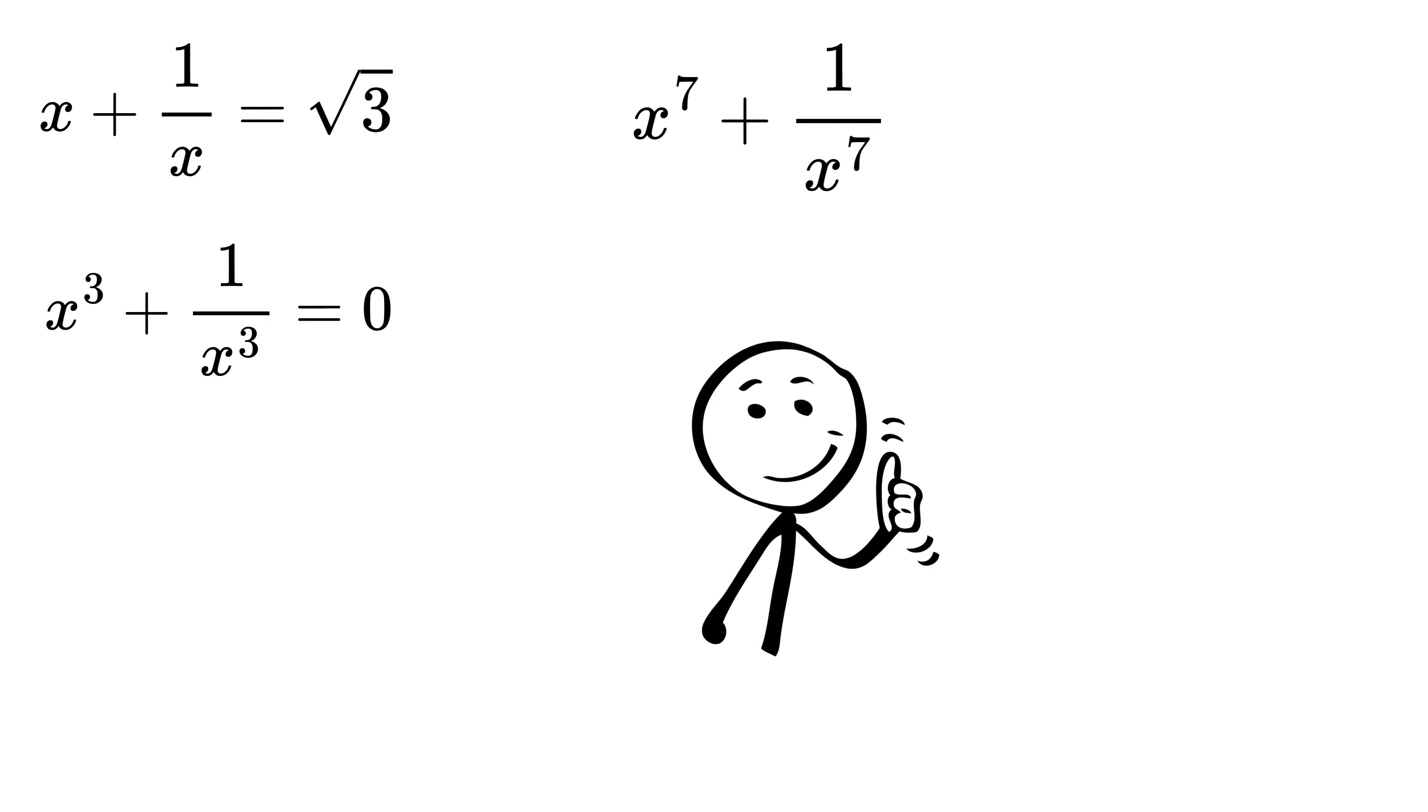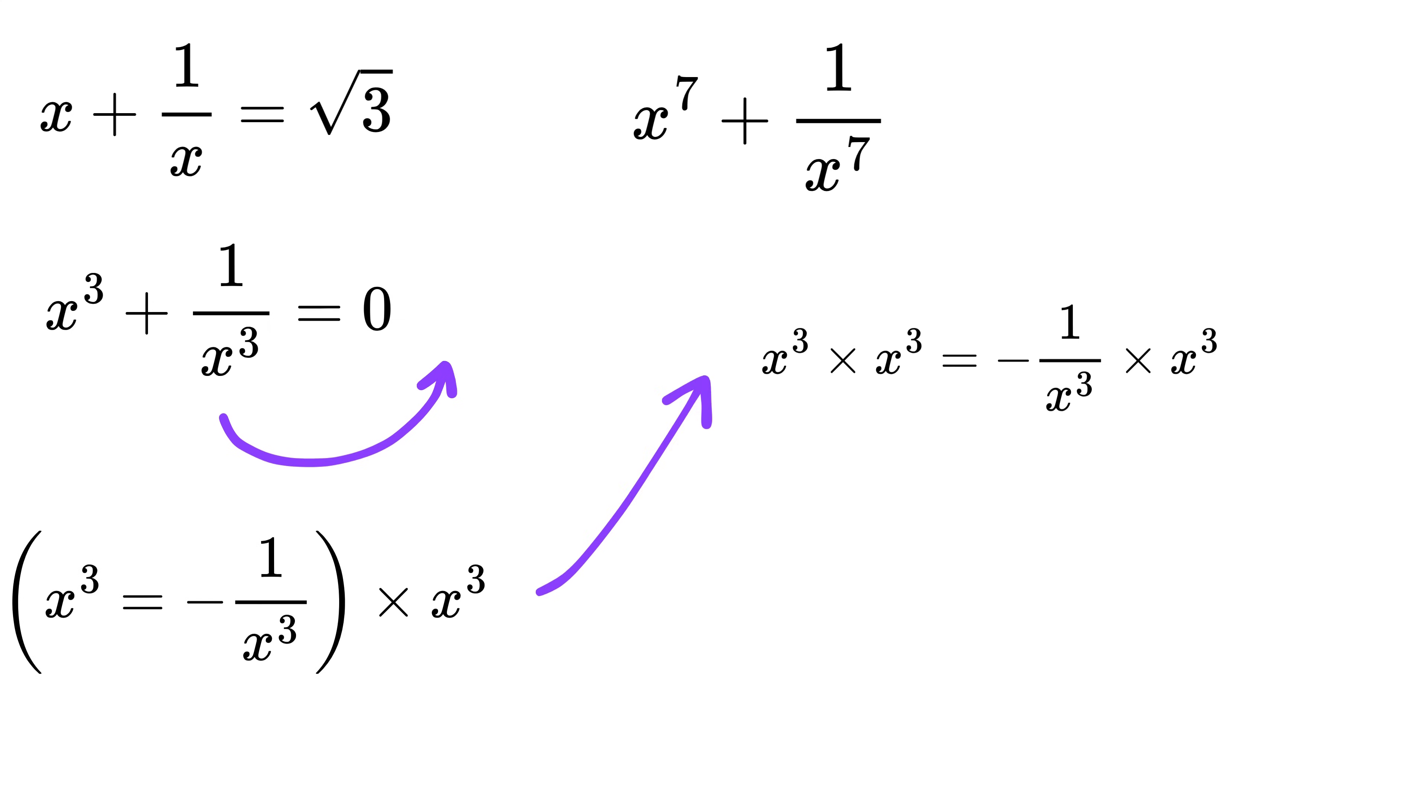Now take this 1/x³ to this side to get x³ = -1/x³. Multiply by x³ on both sides - this will cancel out and we get -1. Using this power rule, we get x^(3+3) or x⁶ = -1.